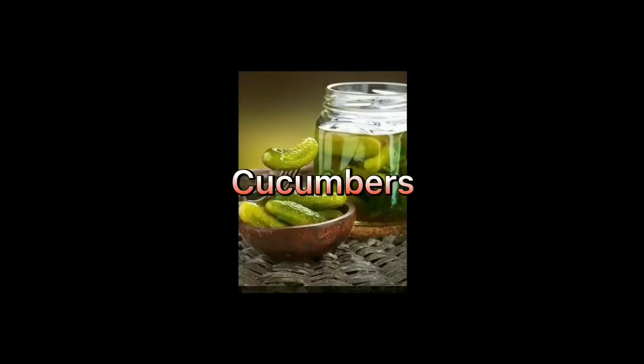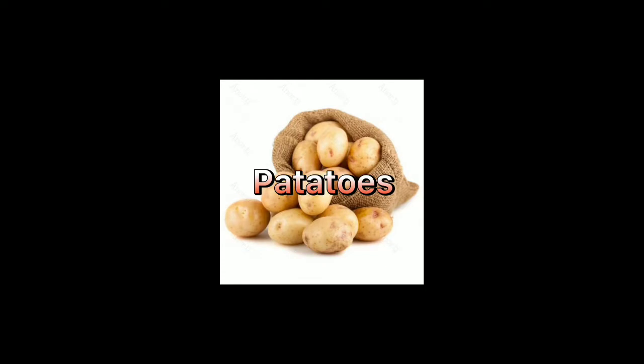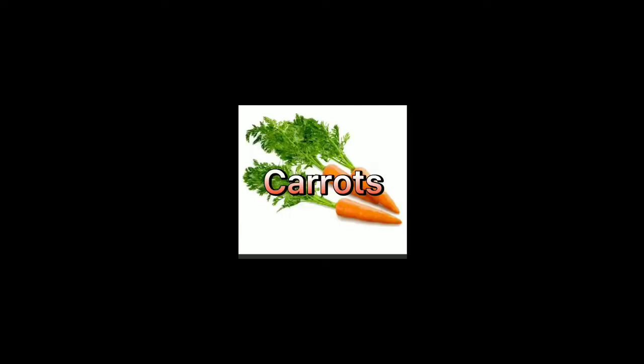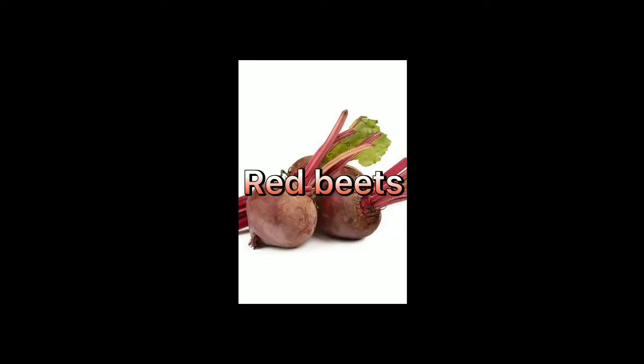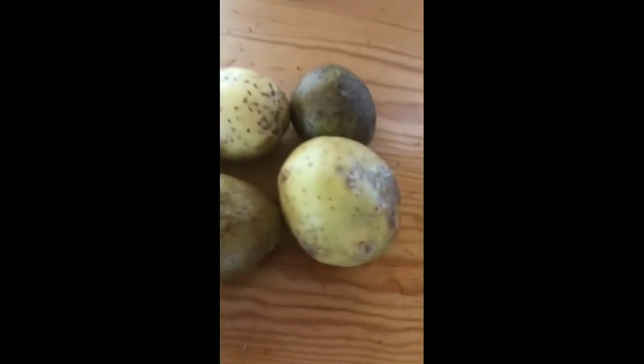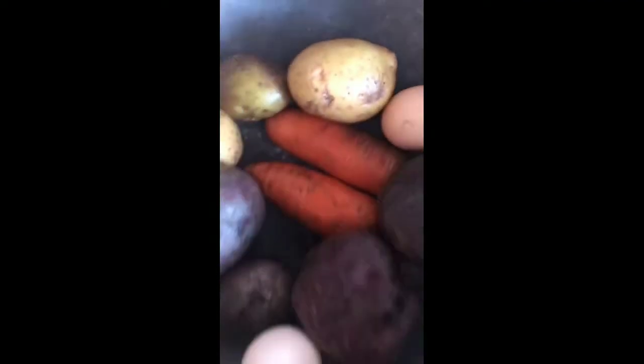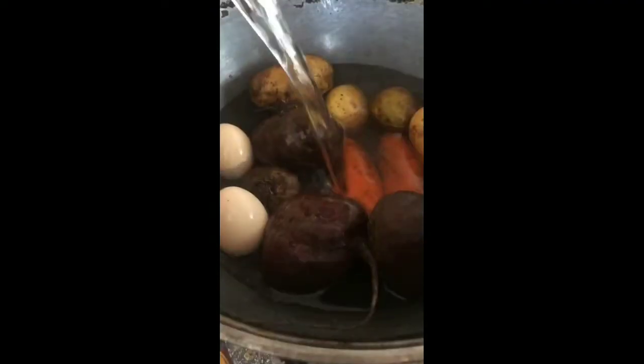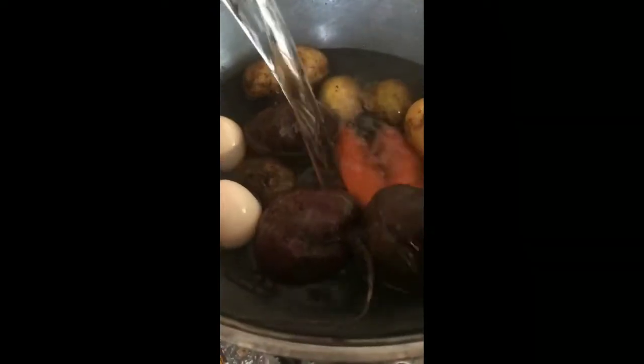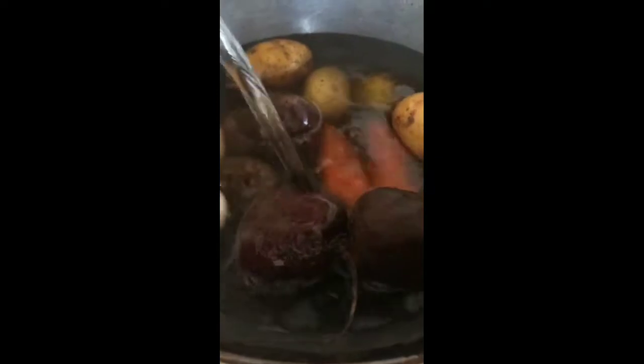For example: cucumber, blue peas, onion, potatoes, carrots, red beets, greens. Then I will carry products into the boiler and I will pour water on the products.